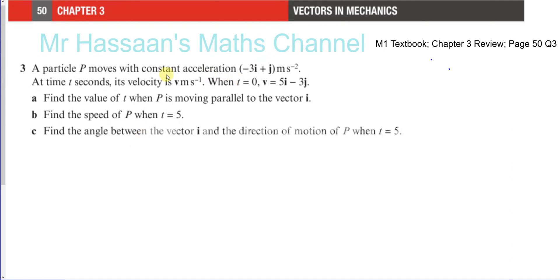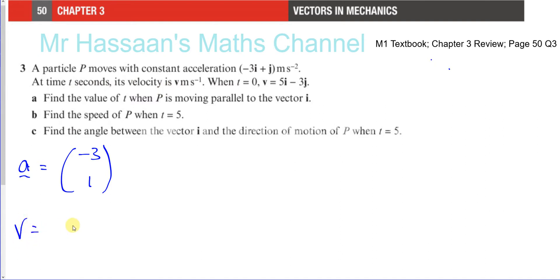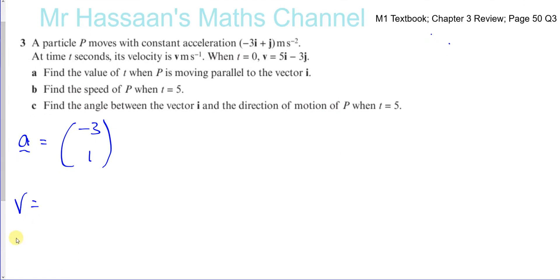A particle P moves with constant acceleration (-3i + j) meters per second squared. So we know the acceleration is given by the column vector (-3, 1). At time t seconds, its velocity is v meters per second. When t equals 0, the initial velocity v₀ is 5i minus 3j — that's the column vector (5, -3).